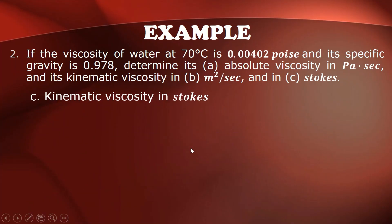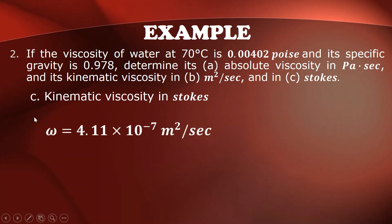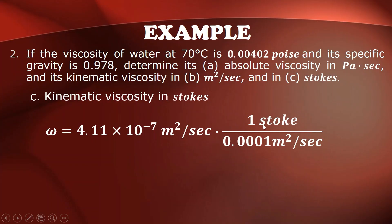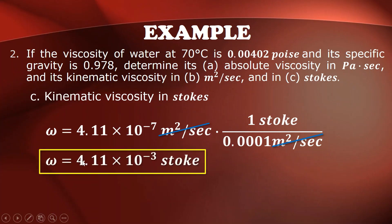For letter C, kinematic viscosity in stokes. Our kinematic viscosity is 4.11 × 10⁻⁷ m²/s. Converting to stokes using 1 stoke = 0.0001 m²/s and cancelling meters squared per second gives 4.11 × 10⁻³ stokes.